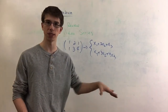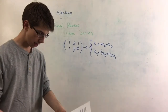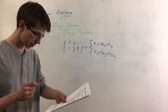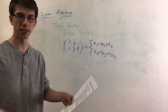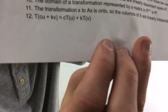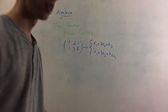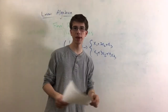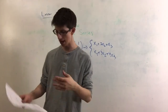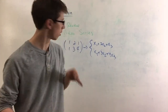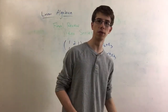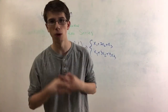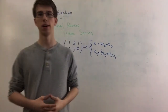You can assume that it is linearly independent based on the fact that it is 1-to-1. The last question is: T(cu + kv) equals cT(u) plus kT(v). This is a property of linear transformations and this is true. That does it for this video — I'll see you in the next final review video for the series where we'll go over our next topic.